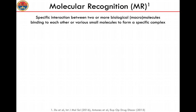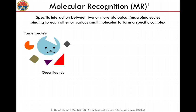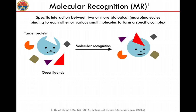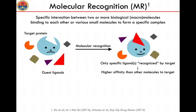Coming to molecular recognition, with this term we identify the formation of a specific interaction between two or more biological macromolecules — proteins interacting with other proteins, nucleic acids, lipids, or small molecules such as drugs, antibiotics, and antivirals. These macromolecules bind to form a specific complex. Suppose you have a target protein that could in principle bind to different ligands — only one ligand will form a stable complex, and only that ligand will be recognized by the protein target, showing higher affinity than any other ligand.